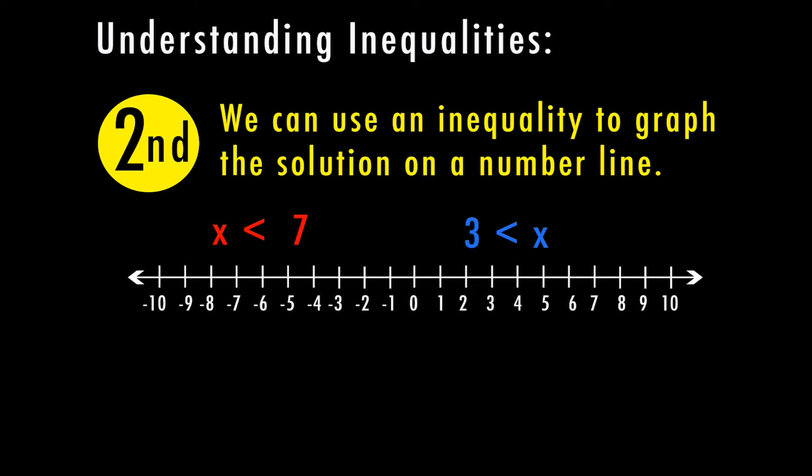As long as your variable is on the left side of your inequality, the inequality symbol is pointing in the direction that the arrow is going to go on the number line. For x < 7, I find seven on the graph. Since x is not equal to seven, I draw an open circle at seven, then shade everything less than that with an arrow going left to show it continues to infinity. So x can be any number less than seven.